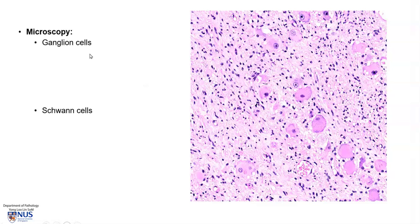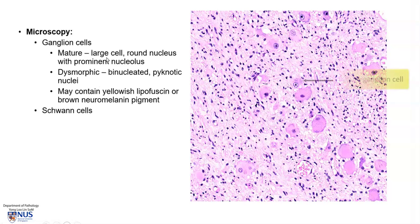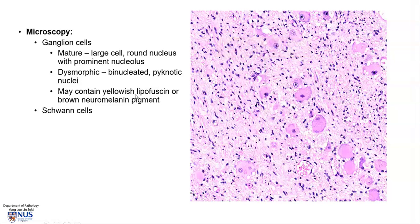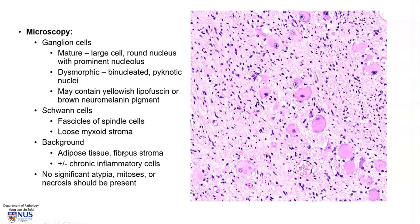Microscopically, ganglioneuromas are composed of two main components: ganglion cells and Schwann cells. Ganglion cells can be mature, with a round nucleus and prominent nucleolus, or they can be dysmorphic — binucleated with dark degenerate pyknotic nuclei. Sometimes you can see yellowish lipofuscin or brownish fine granular neuromelanin pigment in the cytoplasm. Schwann cells look very different; they are usually arranged in parallel bundles or fascicles and have spindle, very elongated and slender nuclei. There may be a myxoid grayish stroma around the Schwann cells.